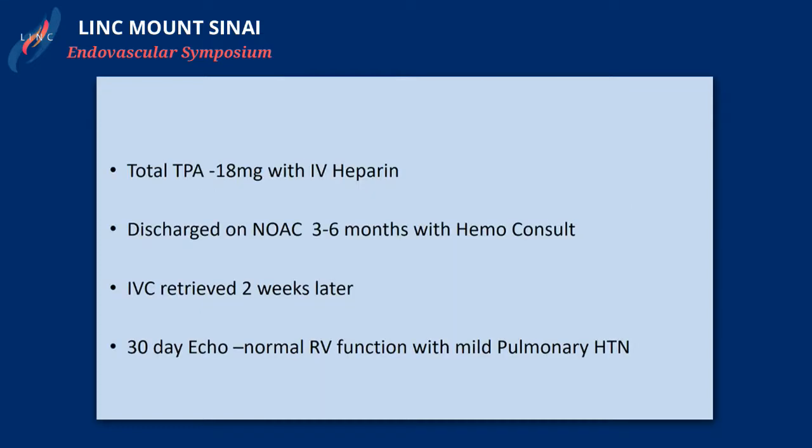The patient ended up receiving a total of 18 milligrams of TPA via ultrasound-directed thrombolysis with the standard IV heparin dose. The patient was discharged on a NOAC for three to six months with follow-up with hematology consultation to assess if it was provoked or unprovoked. The patient returned electively to retrieve the filter two weeks later, and the echo showed normalization and preservation of the right ventricle post-procedure.